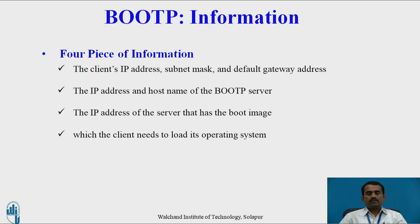If the user wants to configure a booted system, they can use BootP protocol. For that purpose, they have to use four pieces of information: the client IP address, subnet mask, default gateway address, and the IP address and host name of the BootP server. Third is the IP address of the server that has the boot image, which the client needs to load its operating system. After loading all the information, the system can get configured and operate as usual.